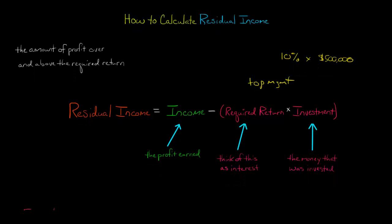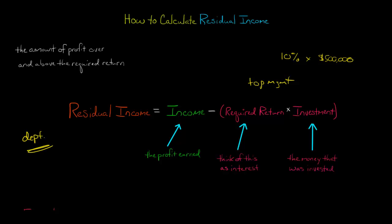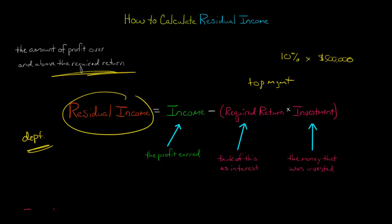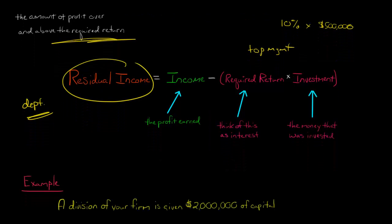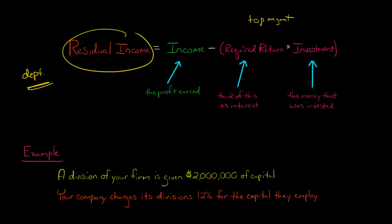So you could think about this required return as interest that is being charged by top management. They're saying, if we're going to give money to each department, we expect a certain return — there is a required return. And then any amount of money that the department brings in, in terms of profit, that is over and above the required return — let's say they're expected to have 10%, well if they can exceed that, then that's the residual income. It's the amount that they earn over and above what they're expected to do.